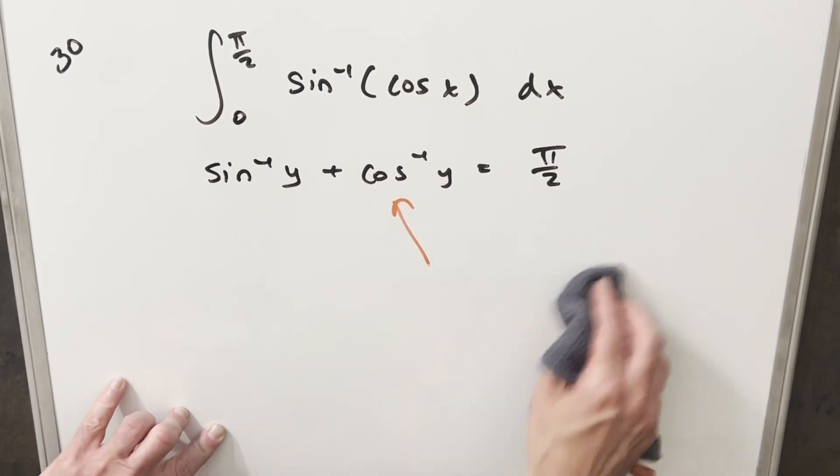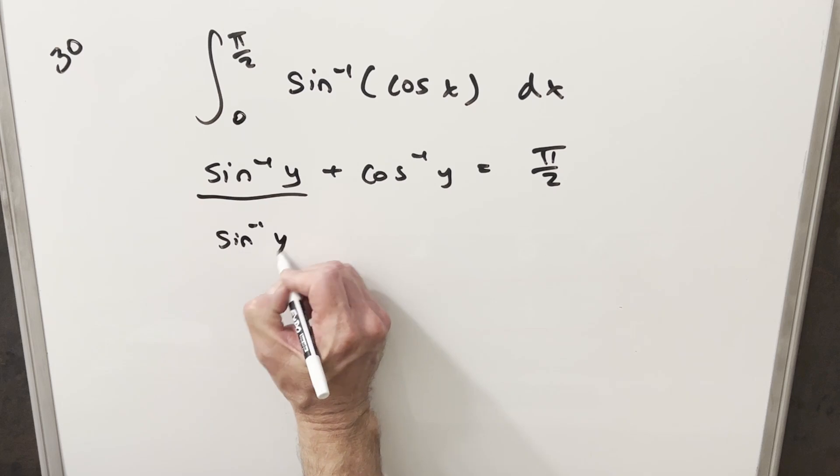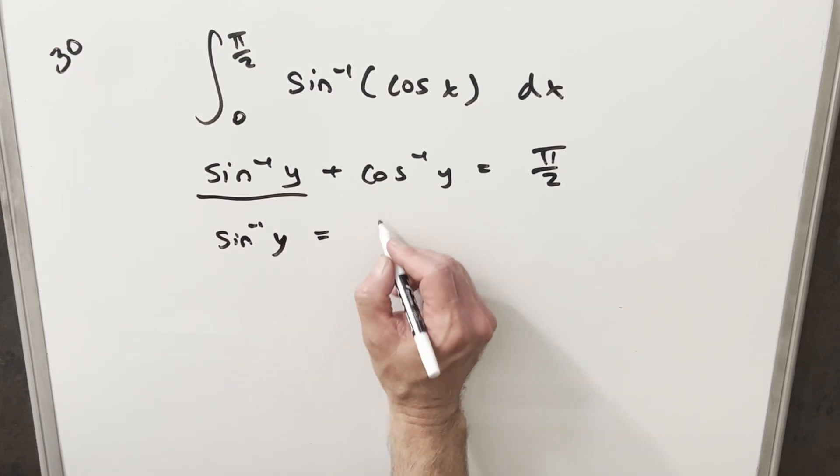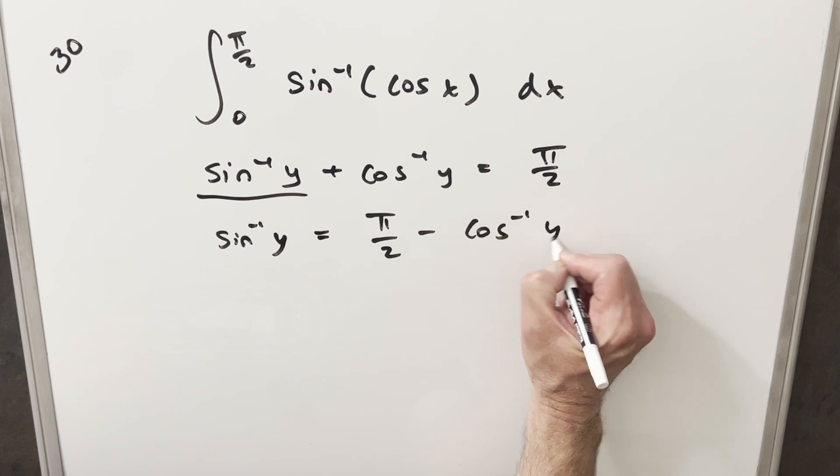Now in order to use this, I'm just going to rearrange this formula a little bit. We'll solve for arcsin of y by subtracting off this term. This is going to be equal to π/2 minus arccos of y.